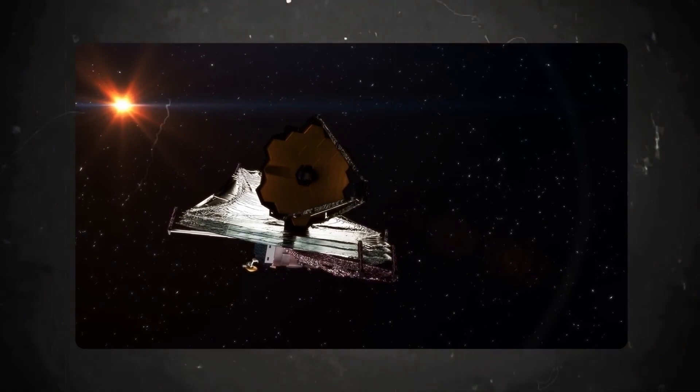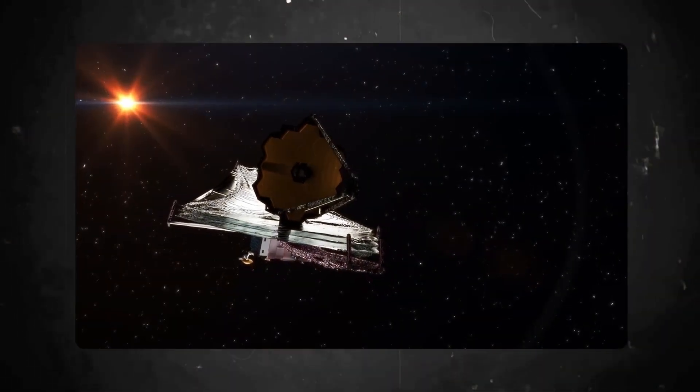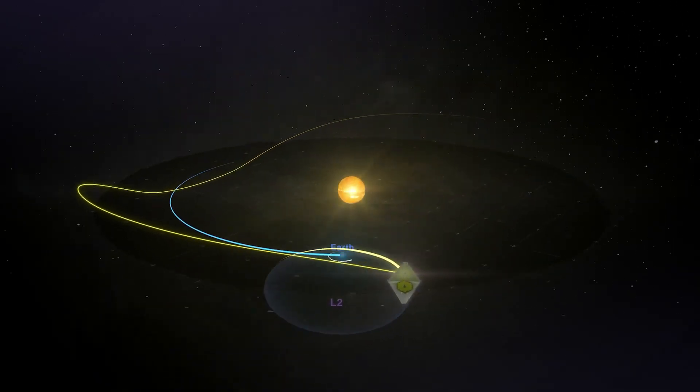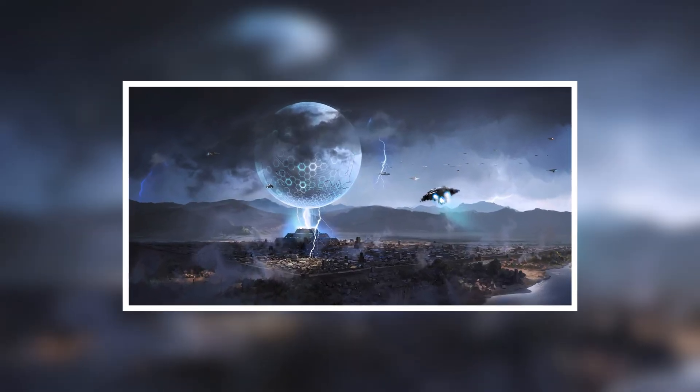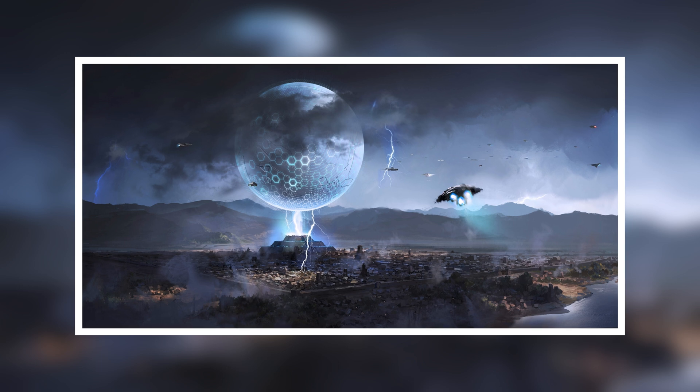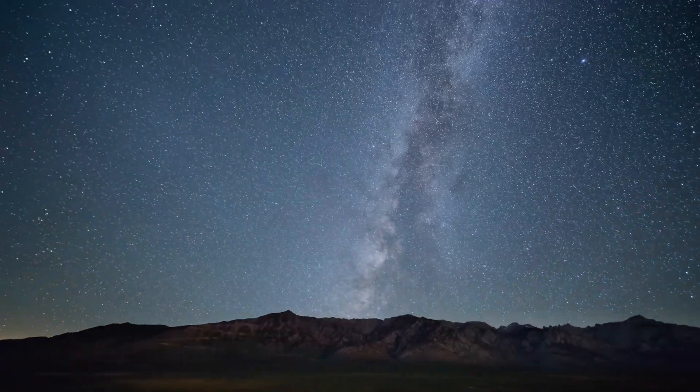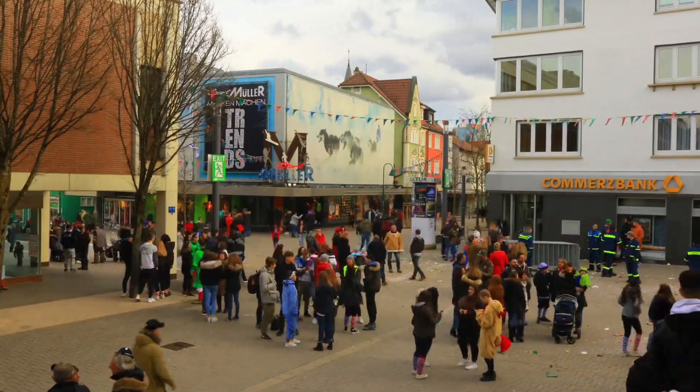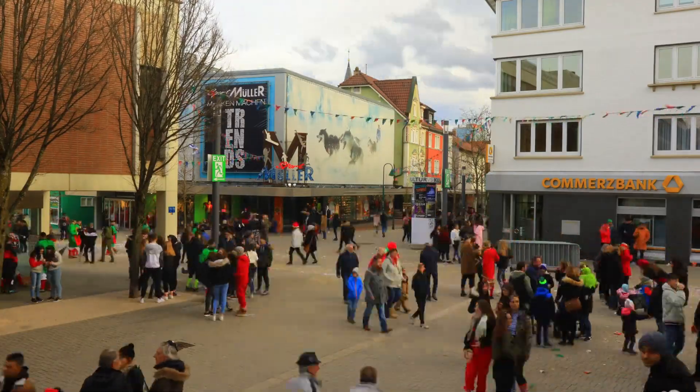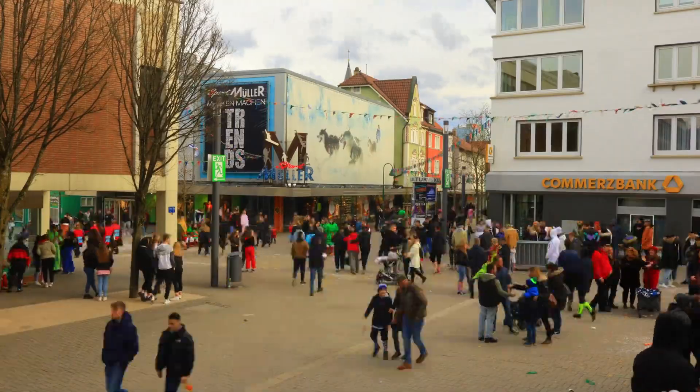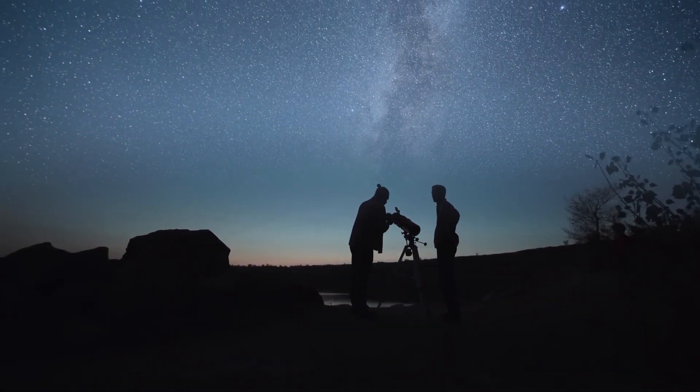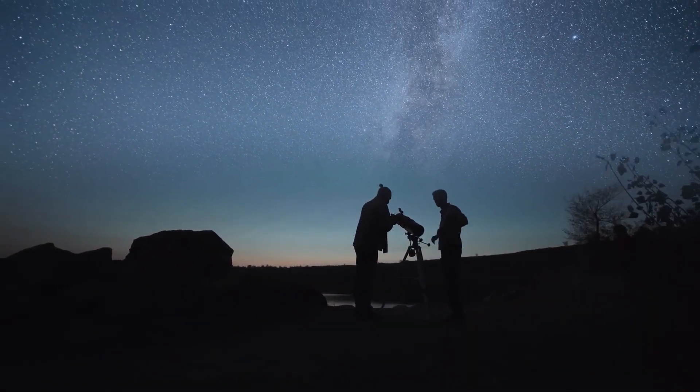If we confirm intelligent life on Proxima b, the big question is whether humanity should attempt to make contact. Reaching out to an alien civilization presents both ethical and practical challenges. Throughout history, encounters between different human civilizations have sometimes led to conflict, misunderstandings, and unintended consequences. The same risks could apply when interacting with an extraterrestrial society.